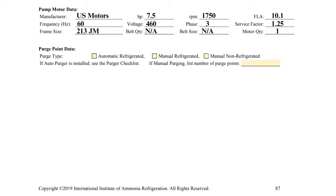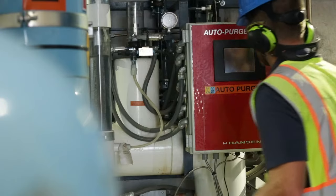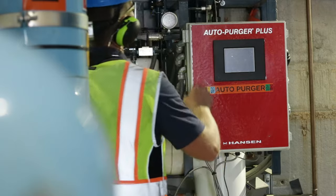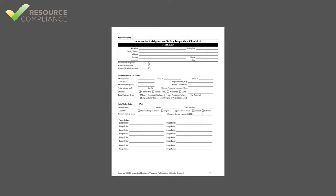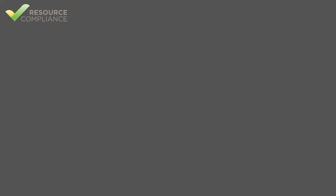The final information required on the first page of the condenser checklist is entitled Purge Point Data. If an auto purger is installed, that box should be checked and the form directs you to completing the auto purger checklist. However, if manual purging is employed, the appropriate box should be checked and the number of purge points recorded. Typically, each condenser drain pipe will have a purge point.